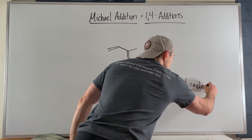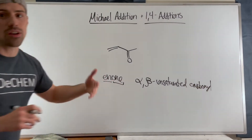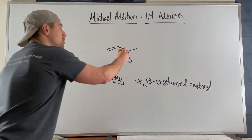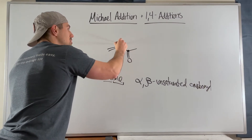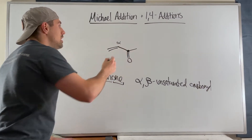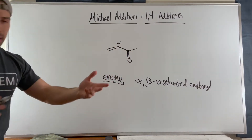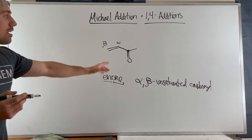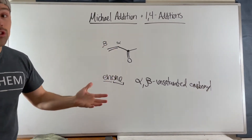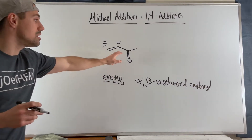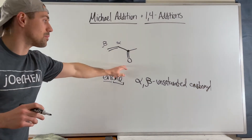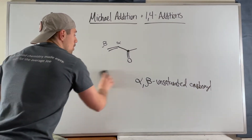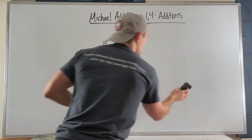Whether it's specifically a ketone or an aldehyde, the reason it's called alpha-beta unsaturated is because the first position away from the carbonyl is the alpha position, and as you go further away you go down the Greek alphabet — so the next is beta. That's where the unsaturation is, and then you have a carbonyl, whether aldehyde or ketone.